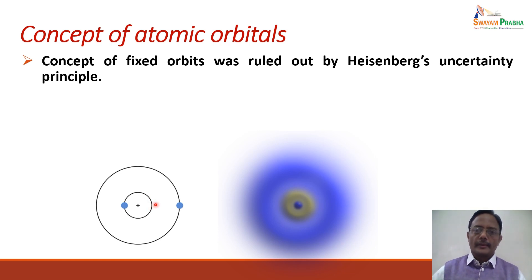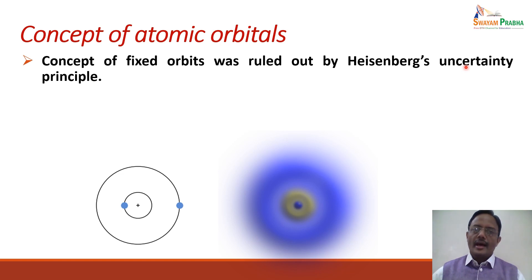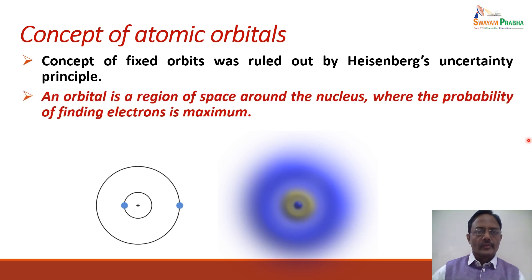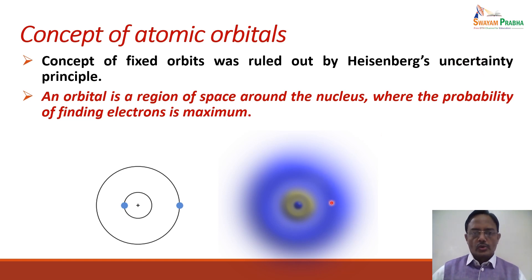However, Heisenberg's uncertainty principle has ruled out this concept of fixed orbits. According to Heisenberg's uncertainty principle, it is impossible to determine the position as well as momentum of an electron simultaneously and accurately. As a result, it is not possible to determine or describe the exact path of the electron revolving around the nucleus. Hence, the electron cannot have fixed orbits.